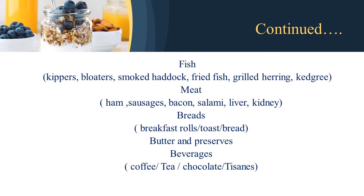Continuing with full English breakfast, we can serve fish — varieties like kippers, bloaters, smoked haddock, fried fish, and grilled herring. Then we can give the option of meat: ham, sausages, bacon, salami, and kidney. Breads include breakfast rolls, toast, and bread. Butter and preserves include jam, marmalade, and honey. Beverages can be coffee, tea, chocolate, or tisane — tisane is generally a herbal tea.